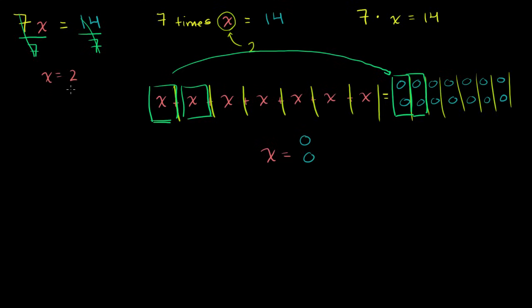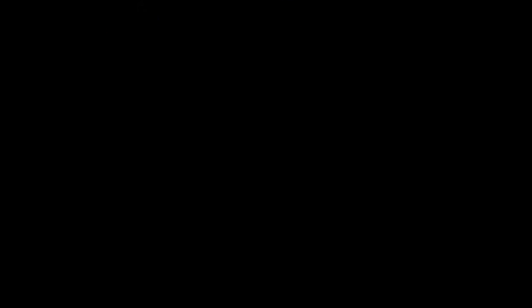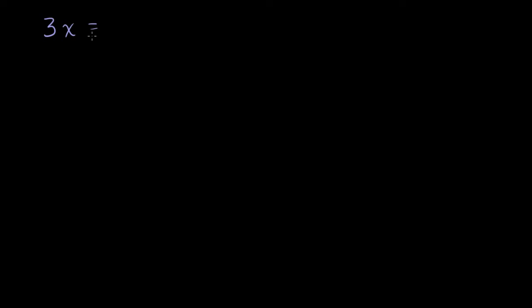Let's do a couple more examples to reinforce that any operation you do to one side of the equation, you should do to the other. Let's say 3x is equal to 15. This is saying 3 times some number is equal to 15. If you want to do this systematically, the left side equals the right side. What do I have to do to the left to have just an x? I want to divide it by 3, so that 3 times something divided by 3 — the 3's cancel out — and I'm just left with x.